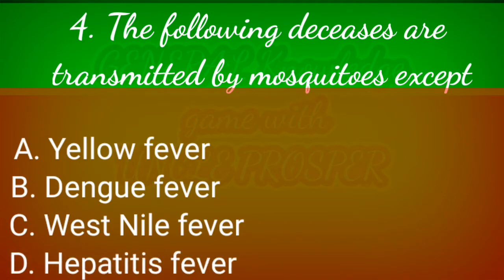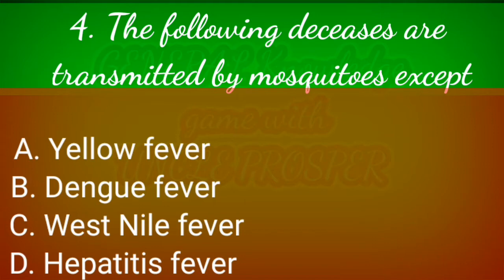Question four: The following diseases are transmitted by mosquitoes except which? Is it (a) yellow fever, (b) dengue fever, (c) West Nile fever, or (d) hepatitis? Yellow fever is transmittable by mosquitoes. A mosquito is a carrier of such diseases, meaning it carries the pathogens that cause the disease. A carrier of pathogens is called a vector.